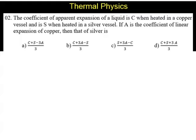Question number 2. The coefficient of apparent expansion of a liquid is C when heated in a copper vessel and is S when heated in a silver vessel. If A is the coefficient of linear expansion of copper, then that of the silver is.